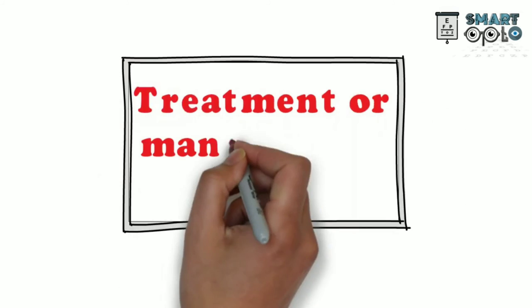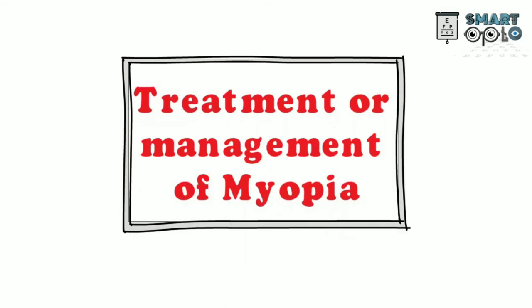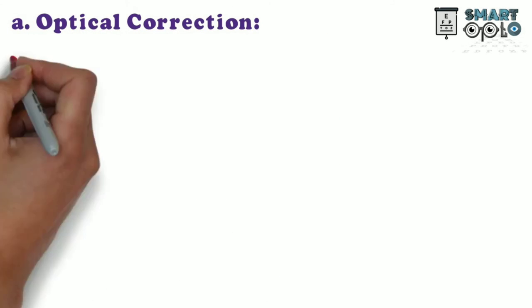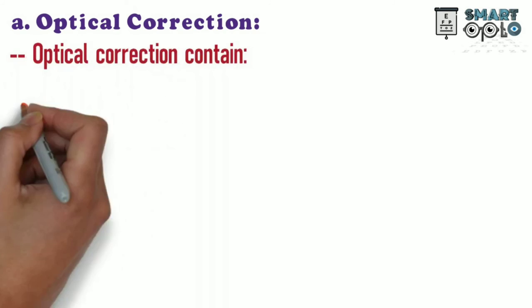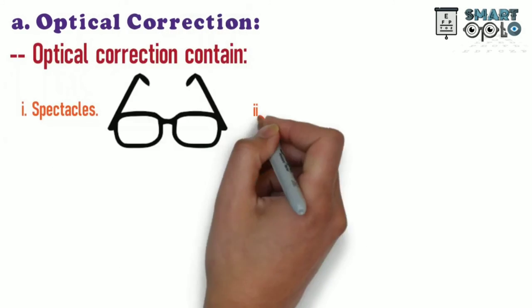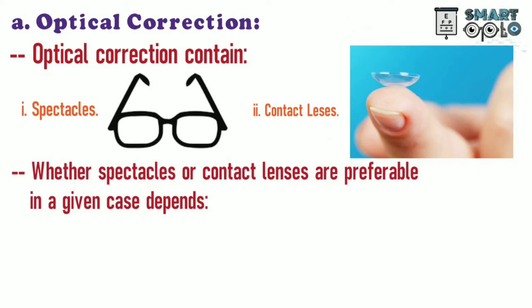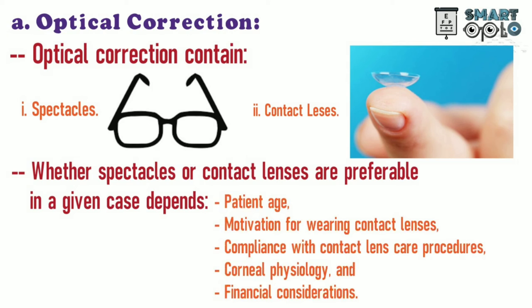Treatment and management of myopia. A. Optical correction contains: 1. Spectacles. 2. Contact lenses. Whether spectacles or contact lenses are preferable depends on patient age, motivation for wearing contact lenses, compliance with contact lens care procedures, corneal physiology, and financial considerations. Optical correction in myopia is a huge topic; I will prepare a separate video about optical correction in myopia.